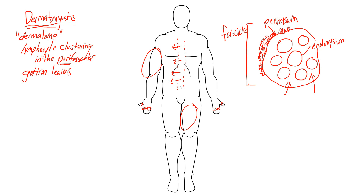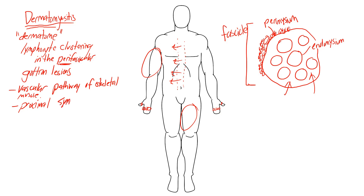The last important thing to know is the pathology. Dermatomyositis is an autoimmune inflammatory disease that attacks skeletal muscle, and specifically it attacks the vascular supply of skeletal muscle. That's a distinguishing characteristic — the other two diseases do not attack the small blood vessels supplying skeletal muscle. It presents with proximal symmetric muscle weakness.